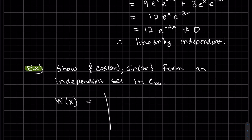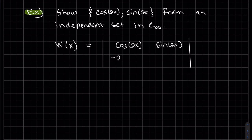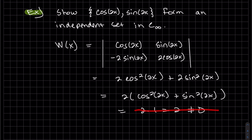So our Wronskian, therefore, the Wronskian is not equal to zero. So the set is independent.